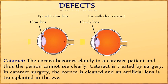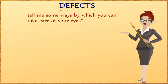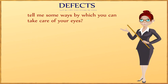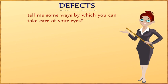Another defect is cataract. The cornea becomes cloudy in a cataract patient and thus the person cannot see clearly. Cataract is treated by surgery — the affected lens is cleaned and an artificial lens is transplanted in the eye. Tell me some ways by which you can take care of your eyes.